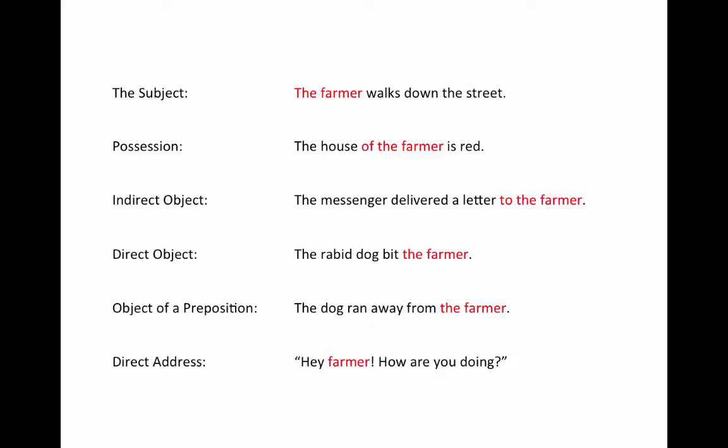A noun can be used as the indirect object, or that which receives the direct object. Here, the messenger delivered a letter to the farmer — the letter is the direct object being received by the farmer, the indirect object. It can be the direct object: 'the dog bit the farmer,' where the farmer is directly receiving the action. It can be the object of a preposition, which just means it can be used in a prepositional phrase: 'the dog ran away from the farmer.'